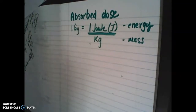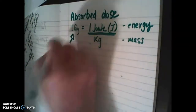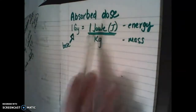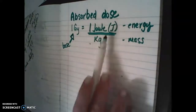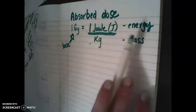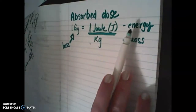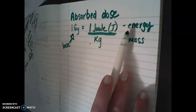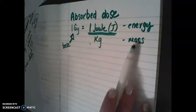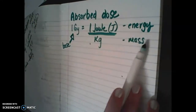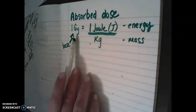We know that the gray is the base unit of absorbed dose. A gray is equal to one joule per kilogram. A joule is energy and the kilogram is mass or matter. The energy we're talking about is radiation — specifically ionizing radiation. As the ionizing radiation moves into the tissue, it's absorbed by that matter. This is going to be the patient — the person that we're treating — or an occupational worker who gets dose.